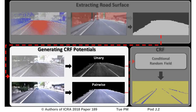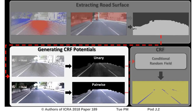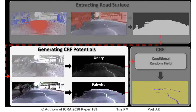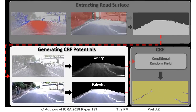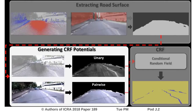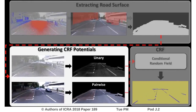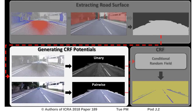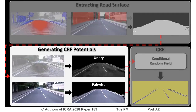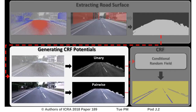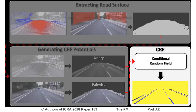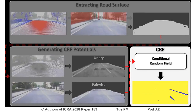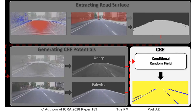We exploit the property that road markings are highly reflective, and use the reflectance values of the point cloud to generate accurate unary potentials for every pixel of the CRF. The pairwise potentials contain the RGB values and the pixel positions. Optimizing the CRF results in road marking annotations created in an automated way.